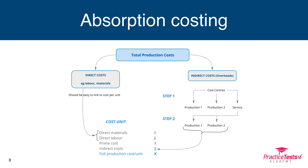Let's remind ourselves of the traditional approach to absorption costing, summarised in a diagram. We get our total production costs, split between direct costs like labour and materials — which are relatively easy to link to costs per unit — and indirect production overheads. Traditionally, the approach is to first identify cost centres in the factory. Production cost centres physically see items being produced; service cost centres don't — for example a canteen or maintenance department. We allocate and apportion costs between those cost centres using a reasonable basis, such as floor space for rent.